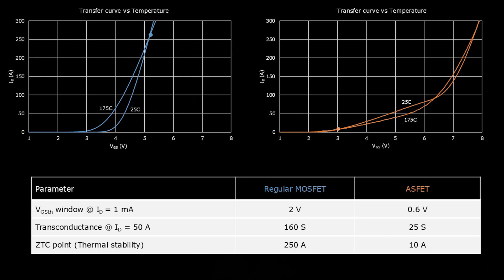For regular MOSFETs, this point is at 250A, which is way higher than the typical operating current. While for the ASFETs, this is just at 10A, which means thermal stability across range.